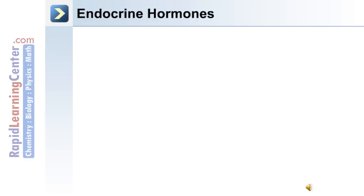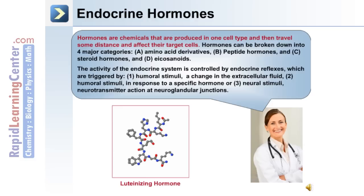Endocrine hormones can target cells locally or at distant sites. Hormones are chemicals that are produced in one cell type and then travel some distance and affect the target cell. The hormones of the endocrine system can be divided into four major categories. The activity of the endocrine system is controlled by endocrine reflexes which are triggered by humoral stimuli such as a change in the extracellular fluid, humoral stimuli in response to a specific hormone, or neural stimuli — neurotransmitter action at a neuro-glanular junction.